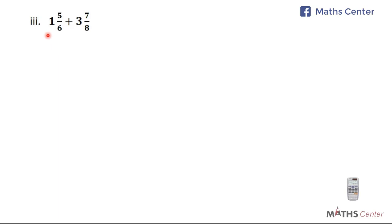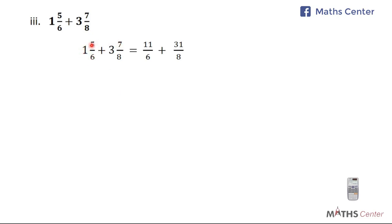We move on to the third example. We have 1 whole number 5 over 6 plus 3 whole number 7 over 8. You can see we have some mixed numbers. To begin the addition process, the first thing you have to do is to convert these mixed numbers to improper fractions. If you convert 1 whole number 5 over 6 to improper fraction, you get 11 over 6. If you convert 3 whole number 7 over 8 to improper fraction, you get 31 over 8.